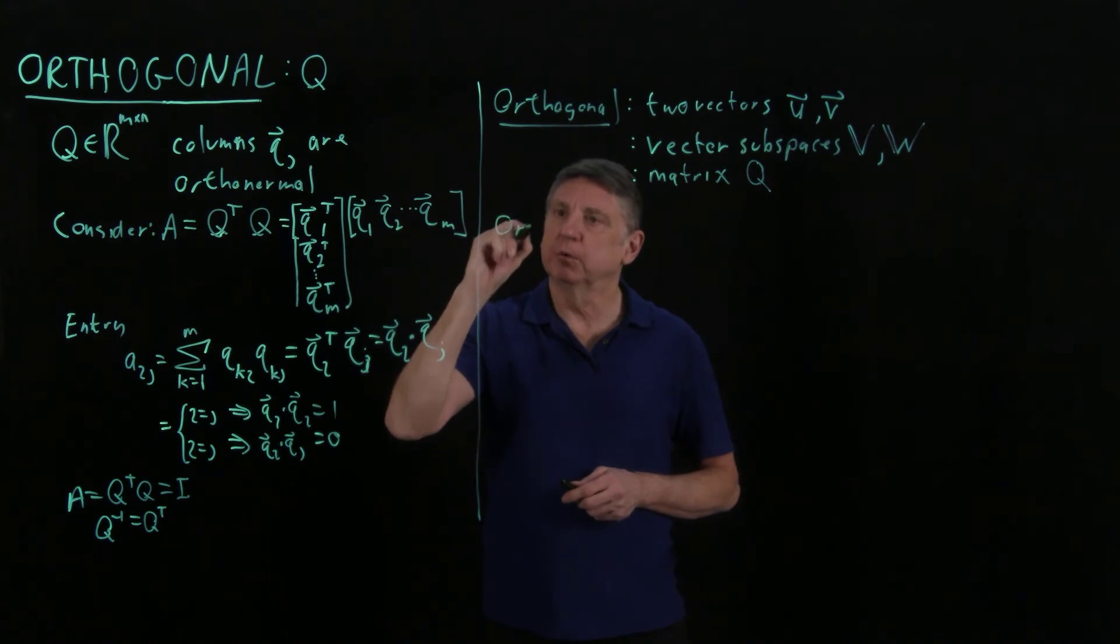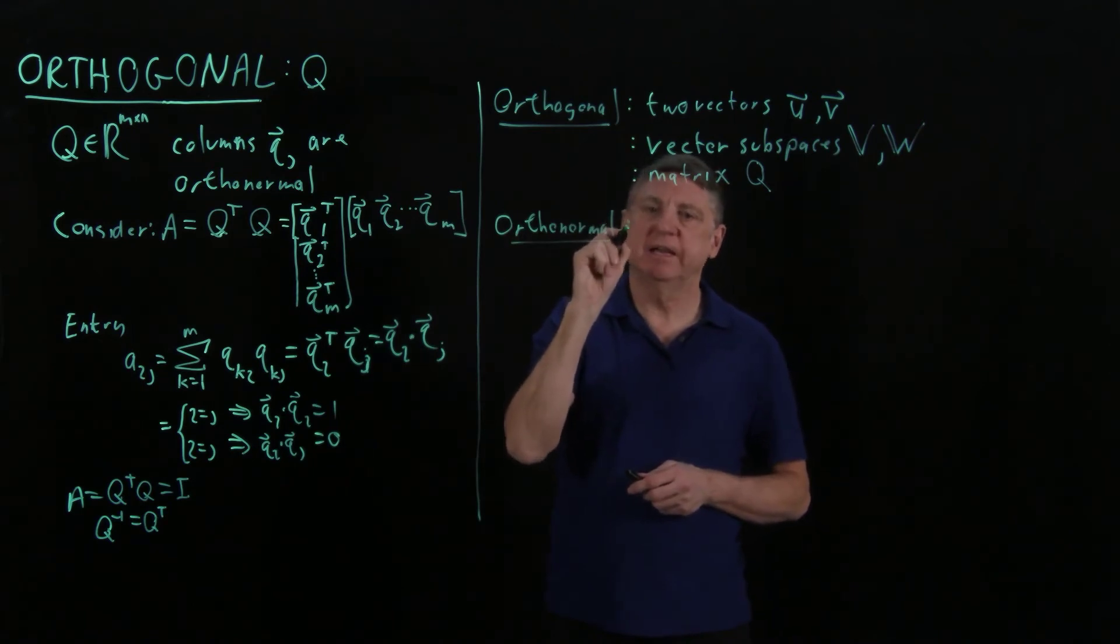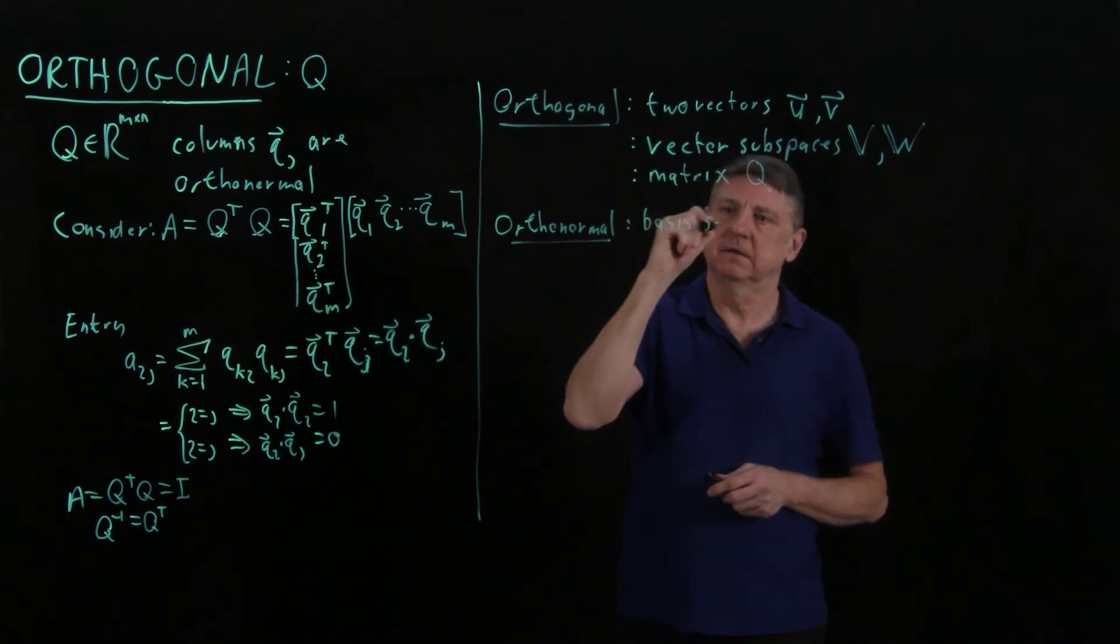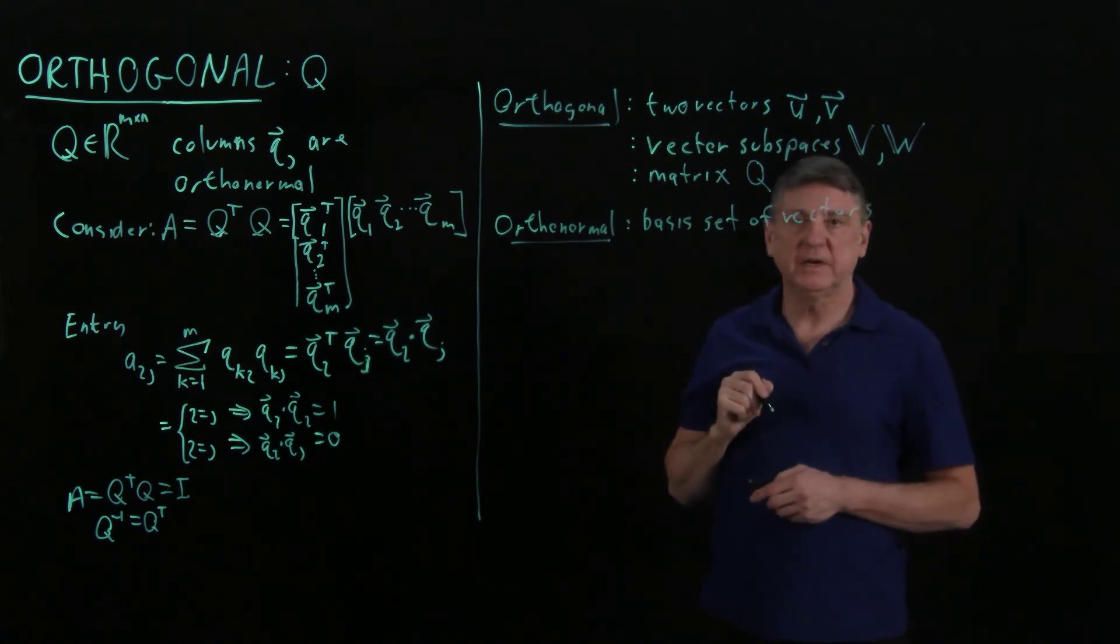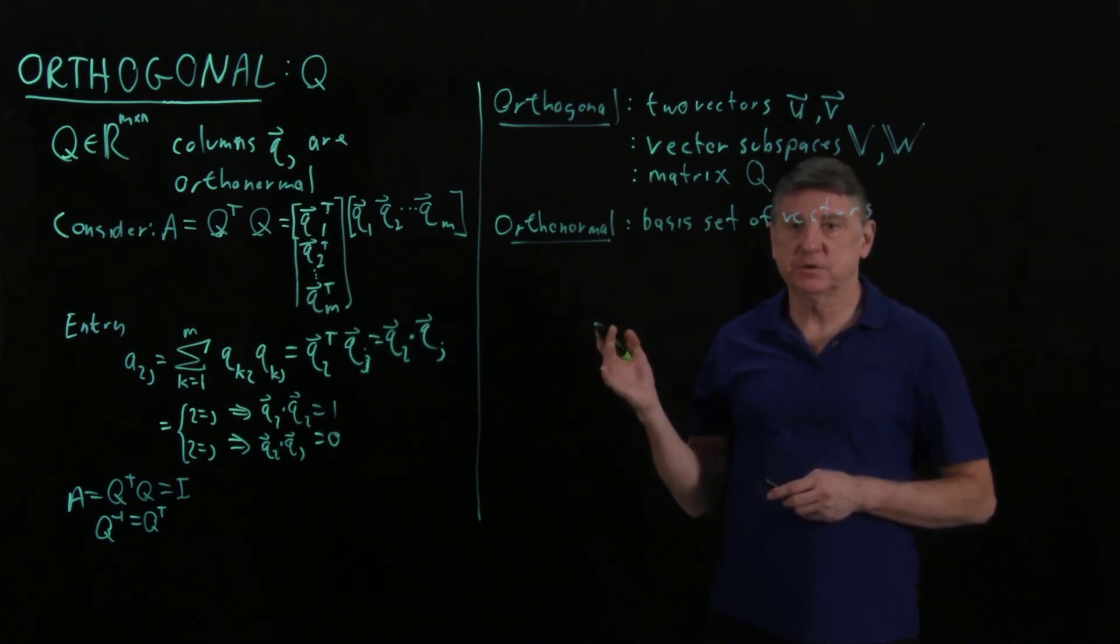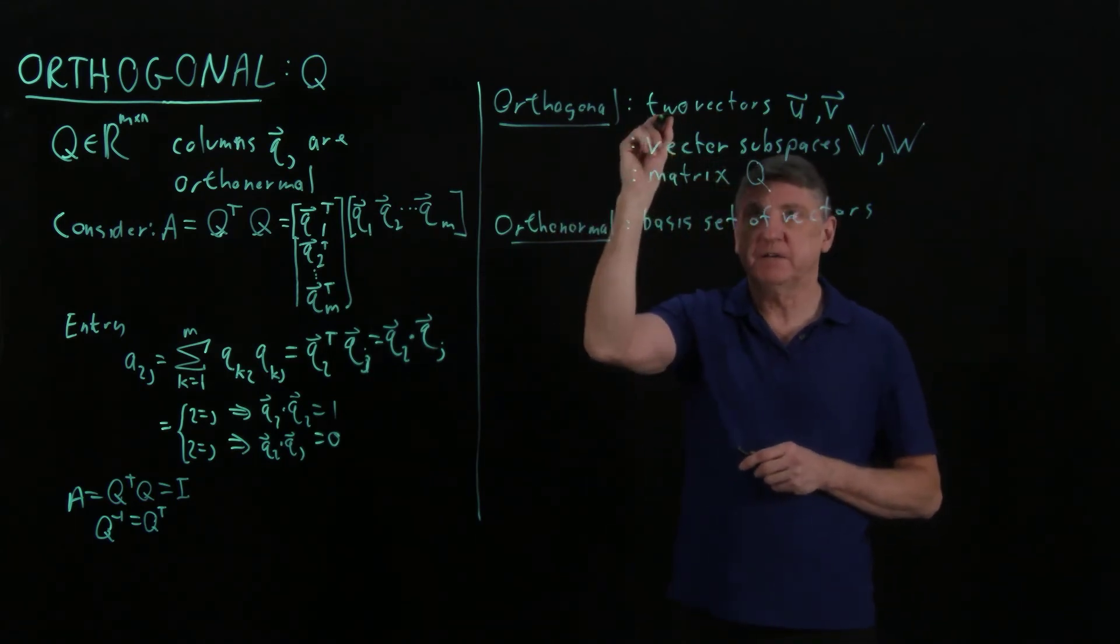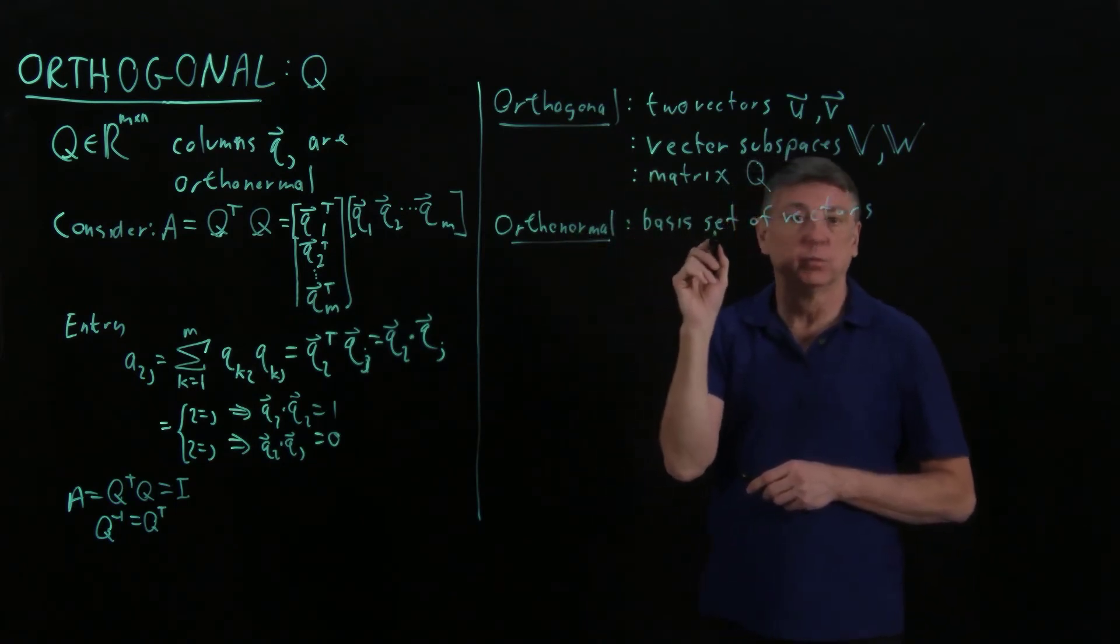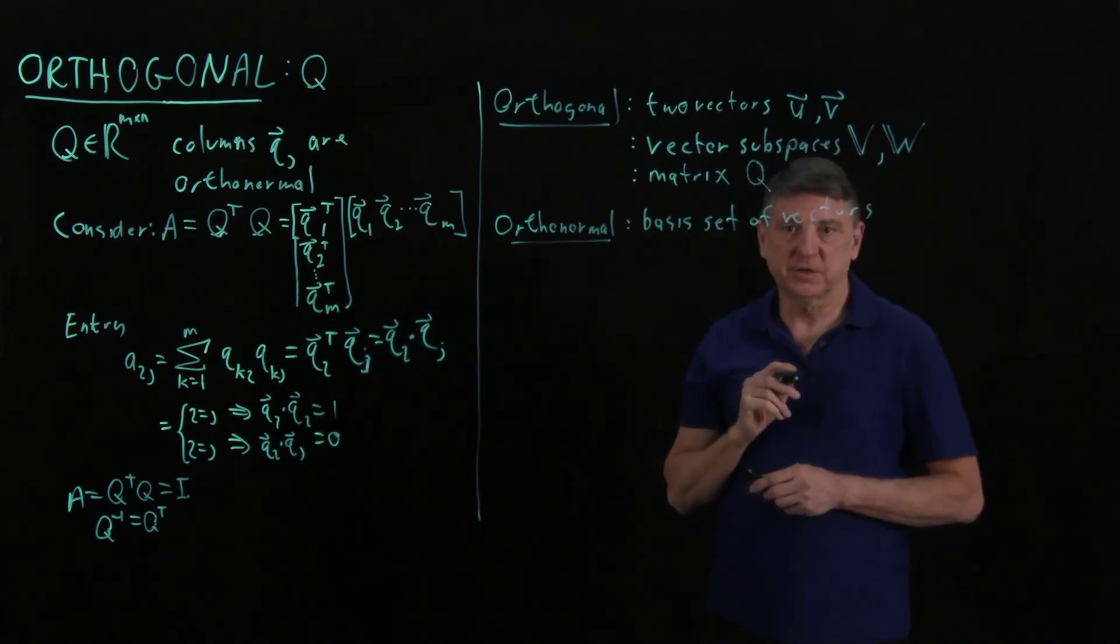Let's observe that orthonormal. Orthonormal is exclusively a basis set of vectors. So we have to keep this in mind when we're reading other sources. When we say orthogonal, we mean either two vectors or vector spaces or one matrix. And orthonormal is two or more, because one is sort of boring, right? Two or more vectors that are a basis.